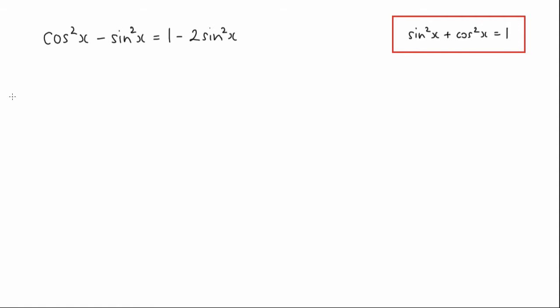So if I start with the left-hand side of this equation, we know that cos squared x minus sine squared x is equal to the following. If I rearrange this, I know that cos squared x is equal to 1 minus sine squared x.